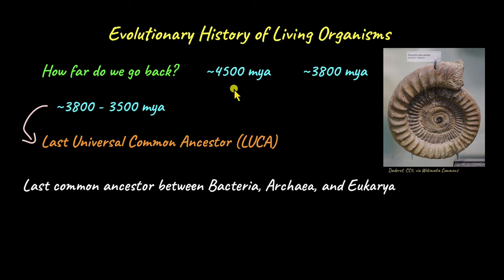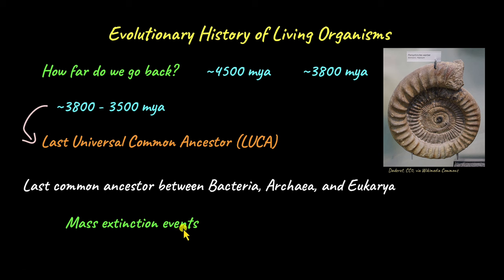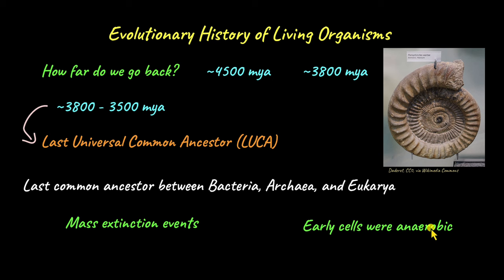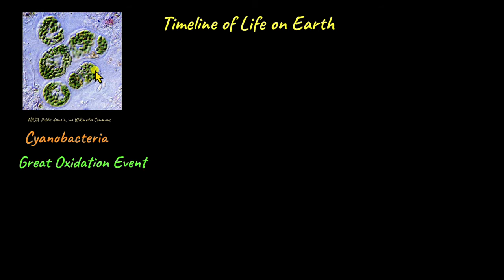The Earth was not as it is now billions of years ago. It was marked by many mass extinction events that killed off a huge number of species. Early Earth was also a highly anaerobic environment, so early cells that lived during that period were also anaerobic — oxygen was not present on Earth yet. The evolution of aerobic organisms and the presence of oxygen can be credited to the cyanobacteria.